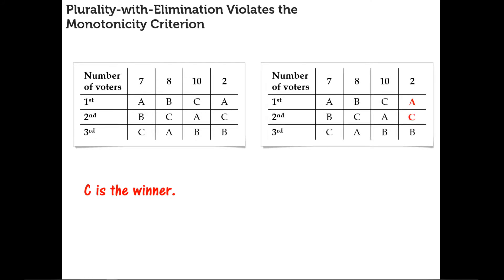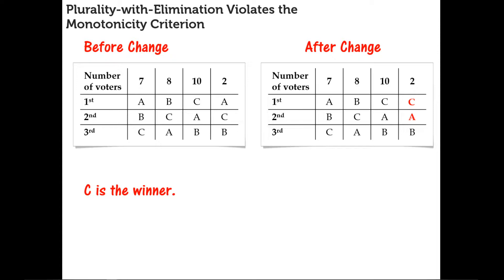Now, what if candidate C was able to convince the two voters in one pile to change their ballot to rank C higher than A? By ranking C higher, that is supposedly an advantage to C. The monotonicity criterion says that if C was the winner before, and the ballots are changed to rank C higher, C should still be the winner. Let's verify that by calculating the winner under the new preference schedule.